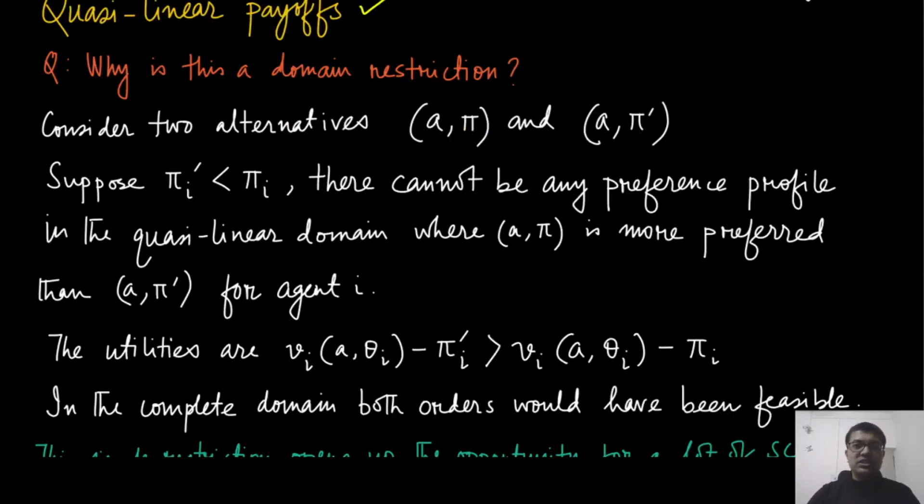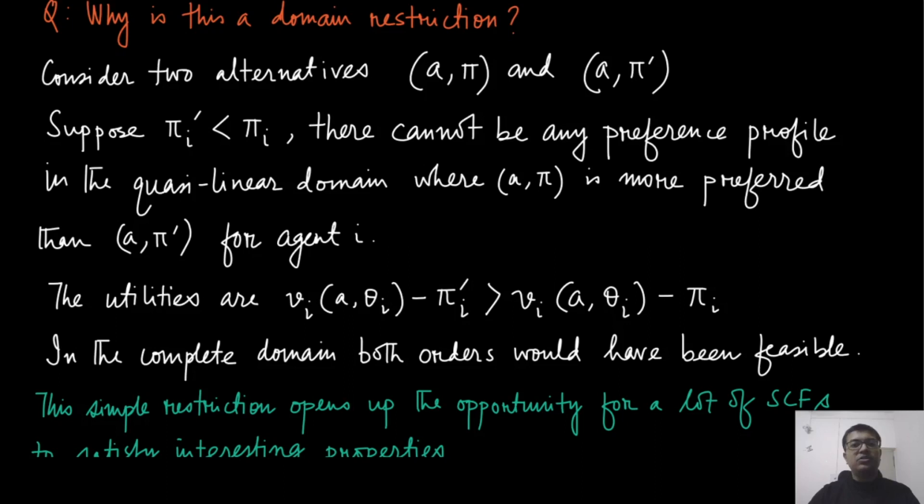Let us conclude this discussion in this module by discussing what is the domain restriction. So why is this a domain restriction? For that, let us consider two different outcomes. Let us say this is x_1, which is the allocation and this payment vector is given by pi. And another outcome, denoted by x_2, let's say, where the allocation remains the same, but the payment vector changes.